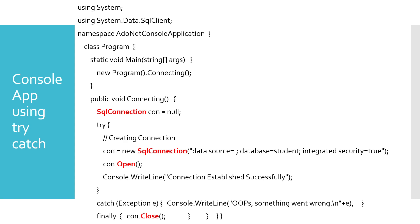We have five steps to establish the database connection and get the records. The first step is SqlConnection - a class that establishes the connection so we can interact with the particular table in a database. After SqlConnection, we need to open the connection, then create a SqlCommand, then execute it. If you need to store the results in a dataset you can do that, and finally we close the connection. These are the five basic steps we perform for database connection.